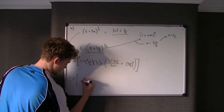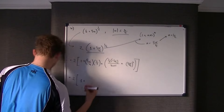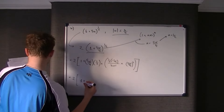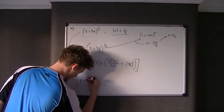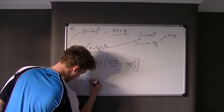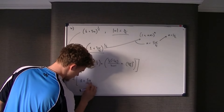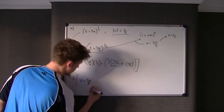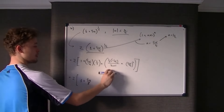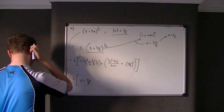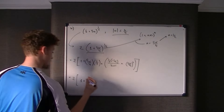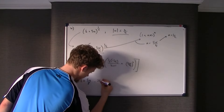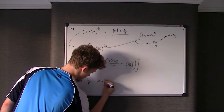Working out each term individually: the first term is just 1, then plus 5x over 8. For the x squared term, you get a half times minus a half over 2, which gives a minus sign, so it's minus 25x squared over 128.